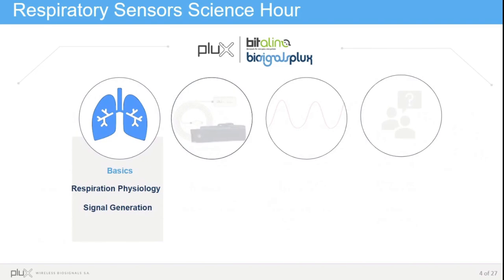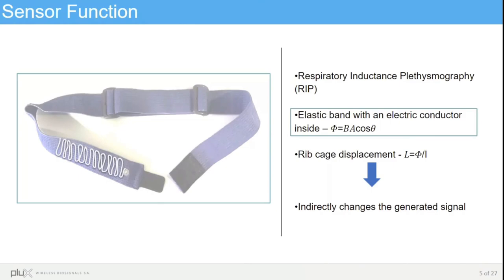Starting by the basics, I will start by explaining how the sensor works. The RIP sensor is composed of an elastic band with an electric conductor inside. The sensing element is embedded in the chest strap fabric, as you can see in the figure in white, and spans its full length. The conductor is rolled around the body, which will be the core of the coil formed by the electric sensing unit.